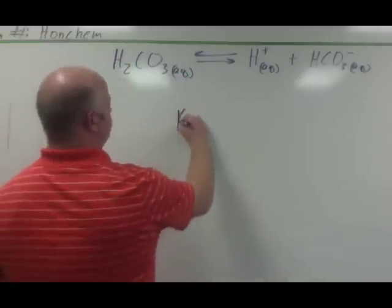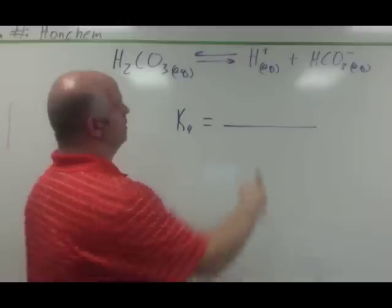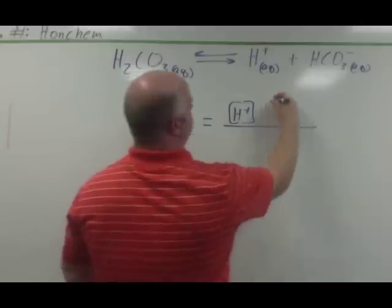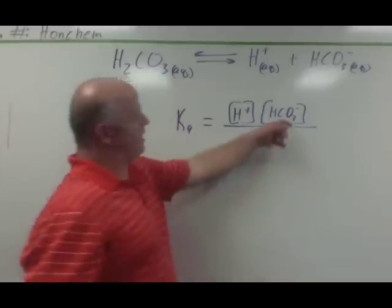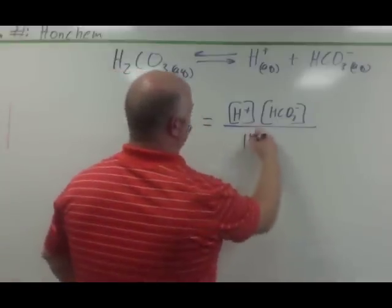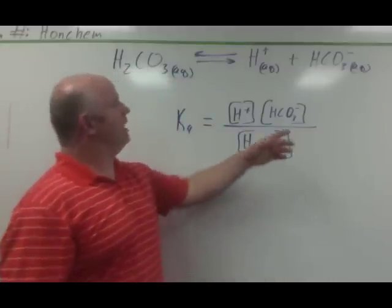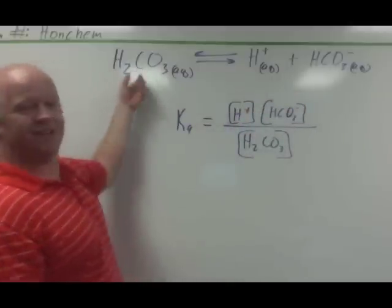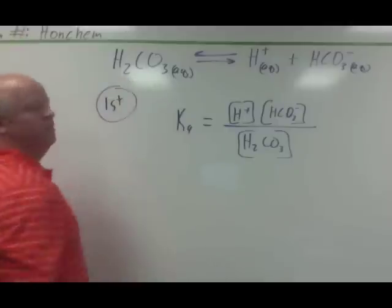So, we write up the expression, that's going to be Ka equals our products over our reactant. So, we have our H plus ions concentration, our hydrogen carbonate ion as the conjugate base here, and of course, the weak acid itself is the reactant here. So, we know that in equilibrium, we have some of this in solution, some of this in solution, and some of this stuck together all in solution. So, this is the first ionization.